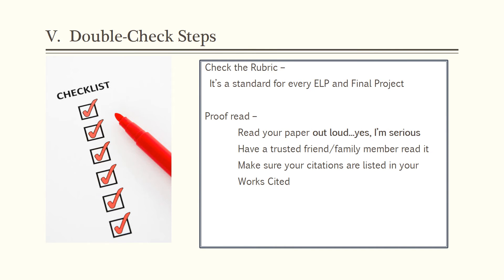As you're about to finish the final lap of your academic research race, double-check these specific steps. Be sure to check your rubric — there's a standard for every experiential learning project and final project in the Division of Continuing Adult and Professional Studies. Be sure to proofread; we encourage students to read their papers out loud, which helps catch errors, run-on sentences, and simple things we could easily overlook. Find a trusted friend or family member to review your paper. Make sure that citations embedded in the body of your literature review are also cited in the works cited portion of your research paper.